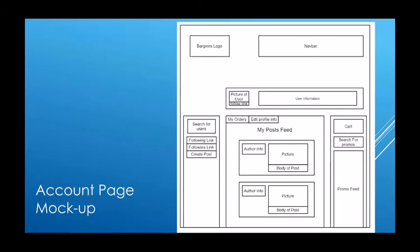Here in the picture to the right, we have a mock-up of our profile page. In the top, we have the Bargains logo. You'll have that same nav bar with all the permissions you have — if you are a business user, you will be able to add a promo; if you aren't, you will not. On the left, we have that same sidebar where you can search for users, see who you're following, all your followers, and you can also create a post. On the right, we have the cart. You can search for promos and there's a little promo feed. In the top middle, this is where your information will be displayed.